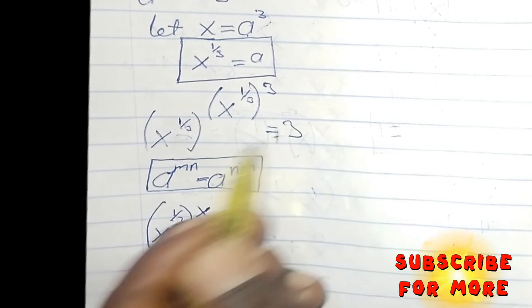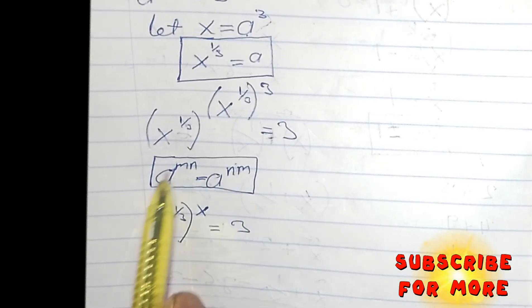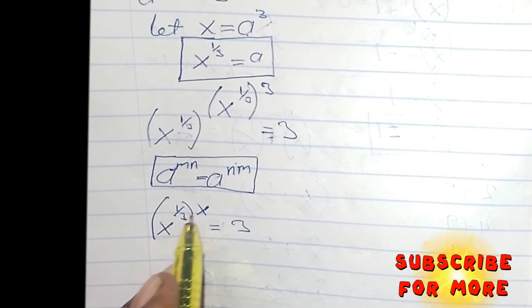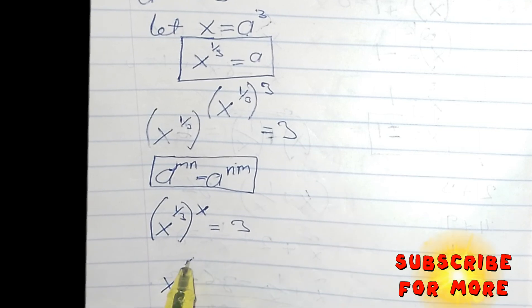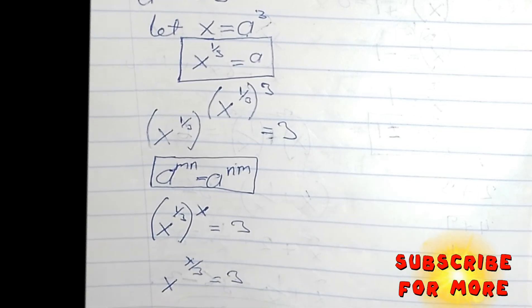This is equals 3. Still going by this law, I can write this as X, then this 1 over 3 will multiply this X, then I'll have X divided by 3, to be equals 3.